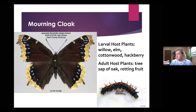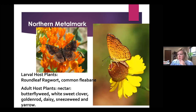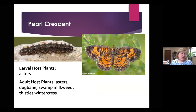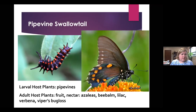The mourning cloak likely overwinters as an adult, coming out pretty early. It feeds on oak tree sap and rotting fruit. The northern metalmark is named for the shiny gray metallic edging and is a fairly indiscriminate feeder — it likes any kind of daisy-type flower. The orange sulfur is very similar to the yellow sulfur. The pearl crescent is pretty common — its larval host plant is asters, and adults feed on asters, swamp milkweed, and thistles. The pipevine swallowtail needs pipevine as a larval host — if you don't have a pipevine, you won't have this swallowtail. Elm, hops, and nettles feed the red admiral.